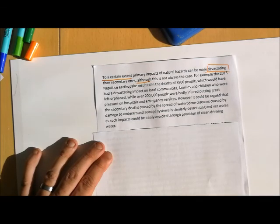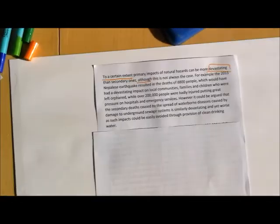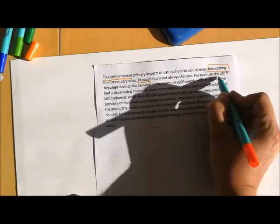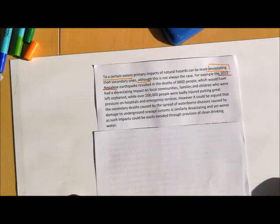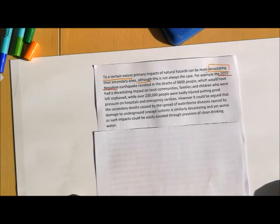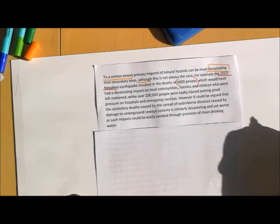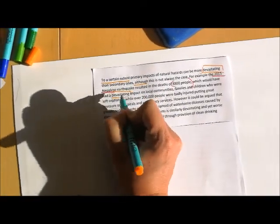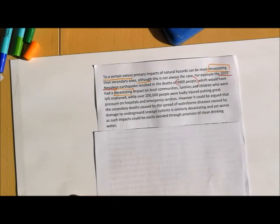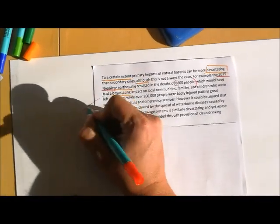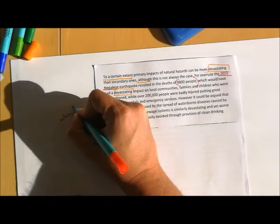For example, the 2015 Nepalese earthquake. I've got my example in there really nice and quickly, which is obviously really important. It asked me to use examples in the question. I don't need to use more than one. Really, the answer to the question would have a bracket around the S, so use an example or examples. It's up to the student, up to you guys to choose. It resulted in the deaths of 8,800 people. I've got one of my primary impacts in there, which would have had a devastating impact on local communities. There's that use of that signposting word, devastating. Families and children who were left orphaned, while over 200,000 people were badly injured, putting great pressure on hospitals and emergency services. I've made it very obvious why this primary impact was devastating.